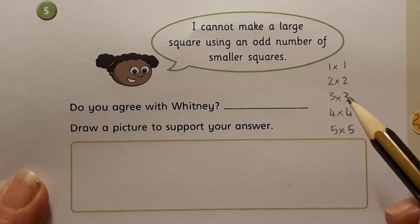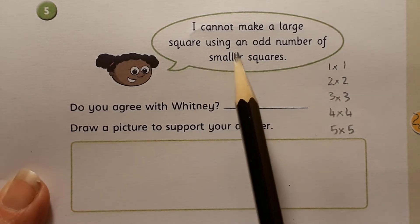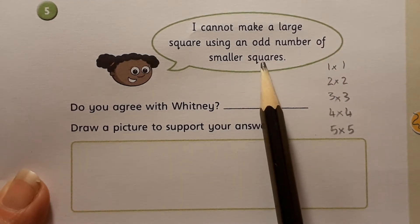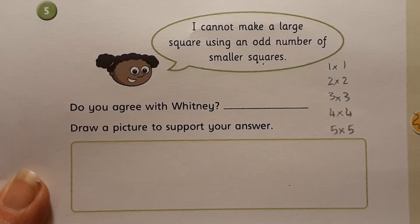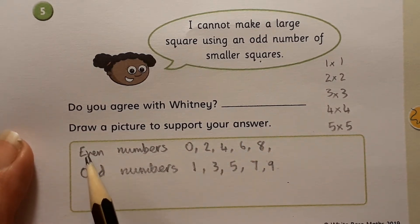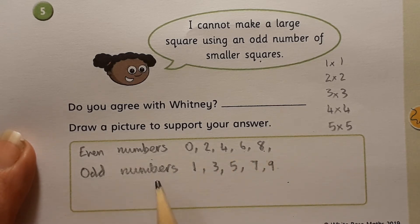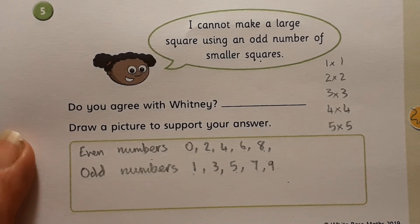Not all of these products are odd numbers, so that's the first decision you'll need to make — you're looking for an odd number of smaller squares. Although you'll draw a picture to support your answer, remember that even numbers end in 0, 2, 4, 6, or 8 and divide by 2 exactly, while odd numbers end in 1, 3, 5, 7, or 9 and do not divide by 2 exactly.